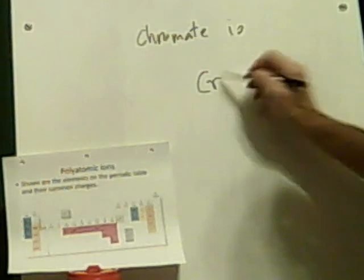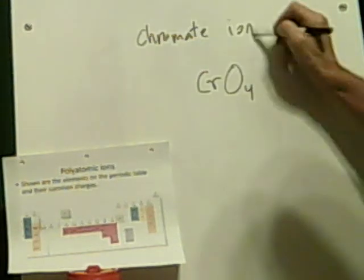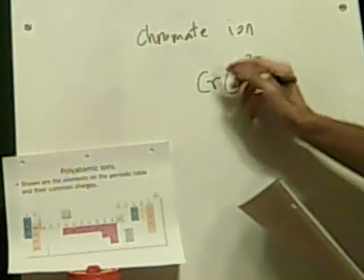Chromate ion — it's going to involve chromium, and I'm going to guess it will have an O4. Honestly I'm not really sure of the net charge. Let's check the answer key. Chromate is CrO4, and the charge state is 2 minus. Chromium is listed as plus 3, but you can't really tell the charge state of this chromate ion from that alone.